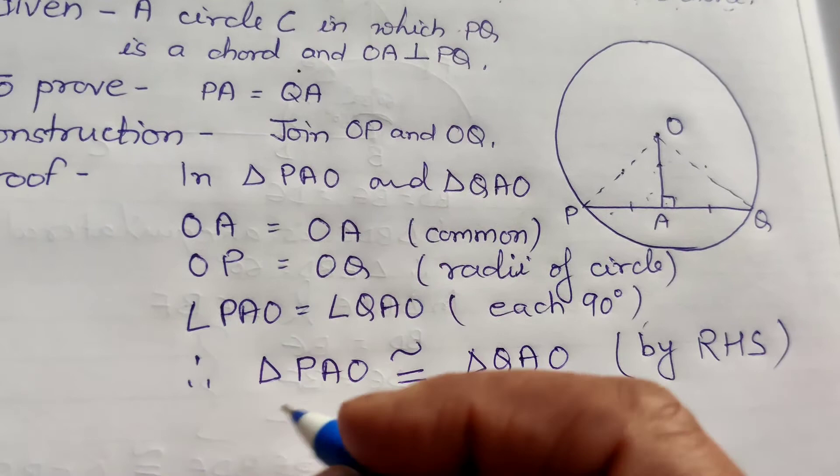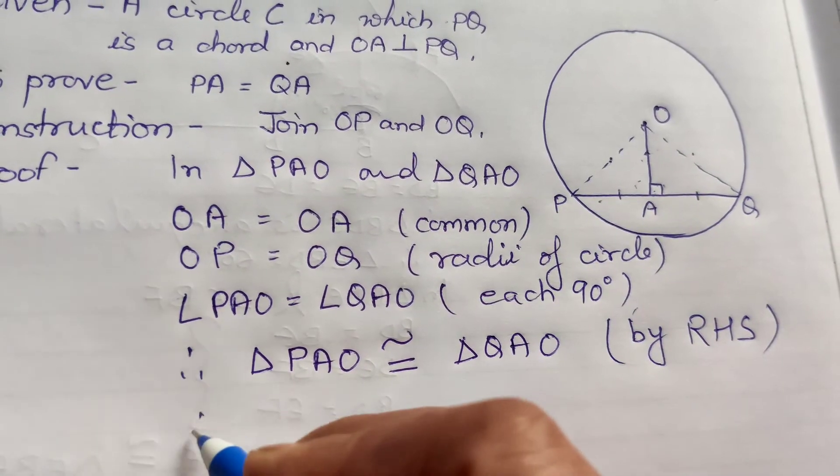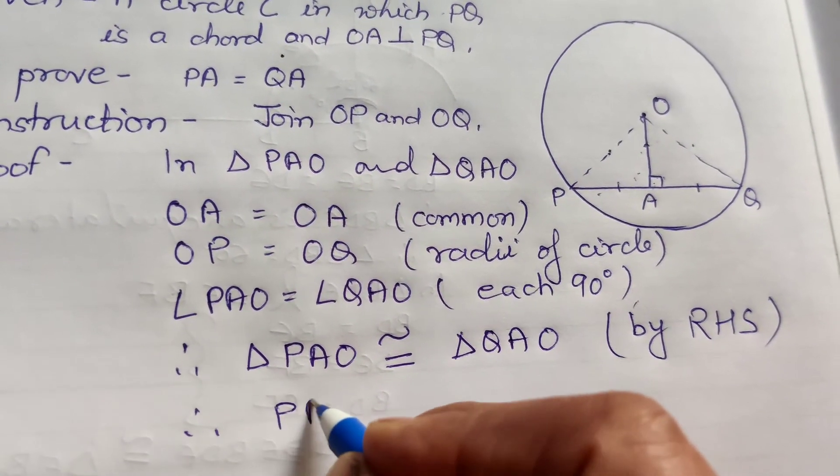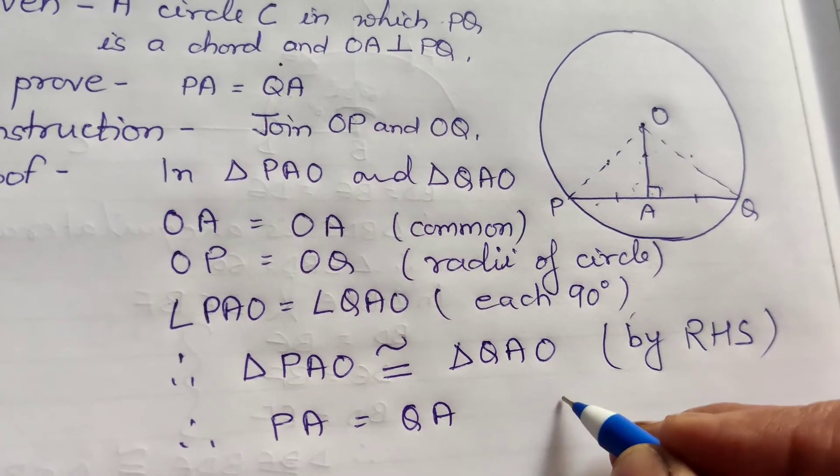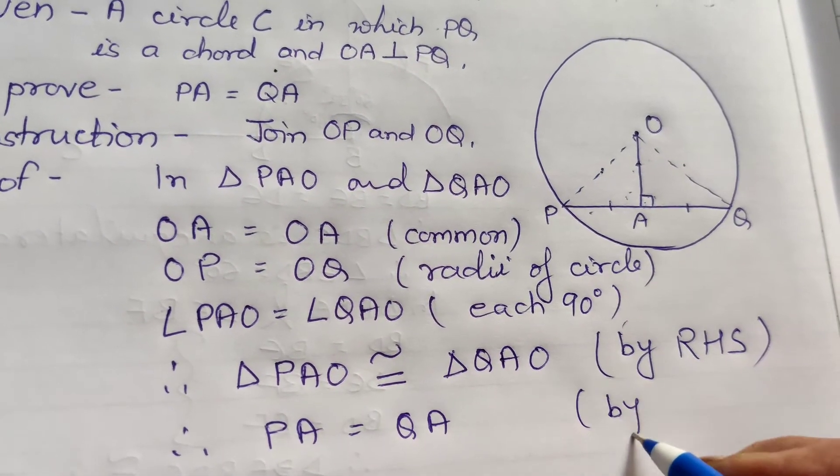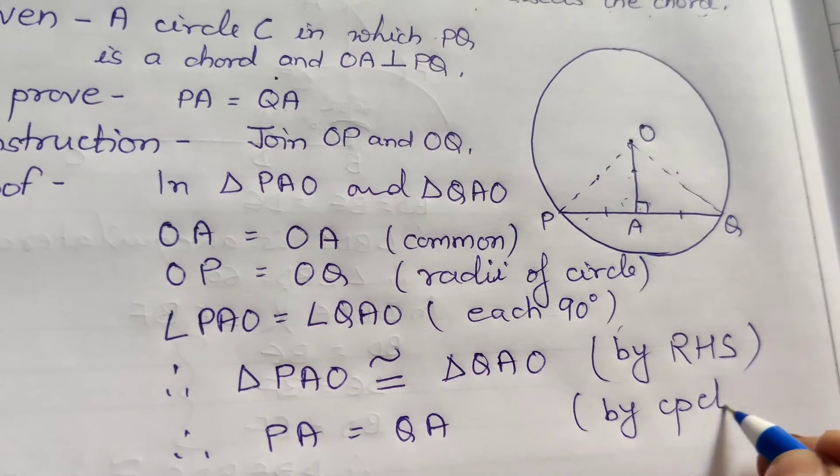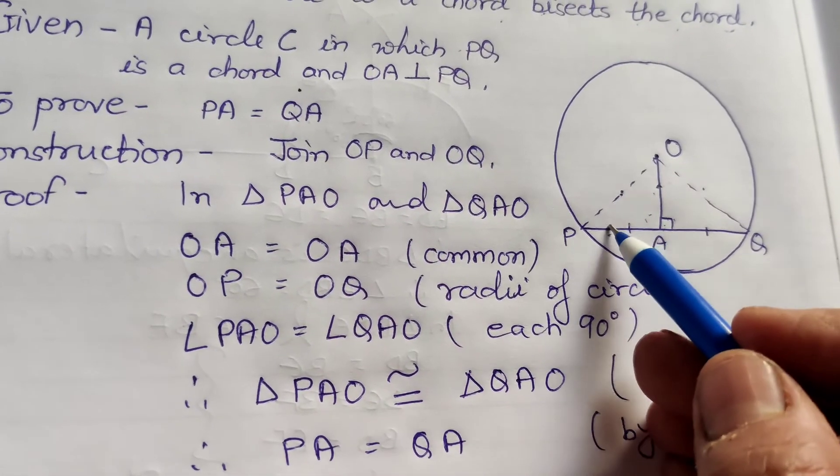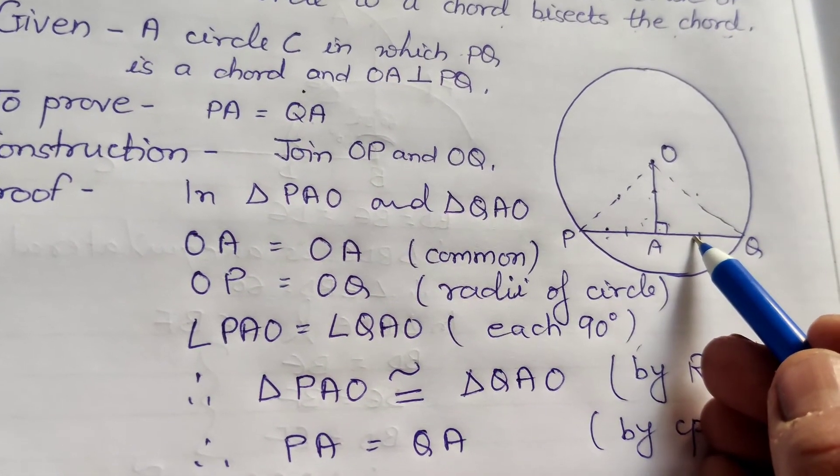By RHS congruent criteria. Jab yhe dounou triangle congruent hai, to PA equal to QA by CPCT, corresponding part of congruent triangle. Usse hamara kya ho gaya? PA equal to QA.